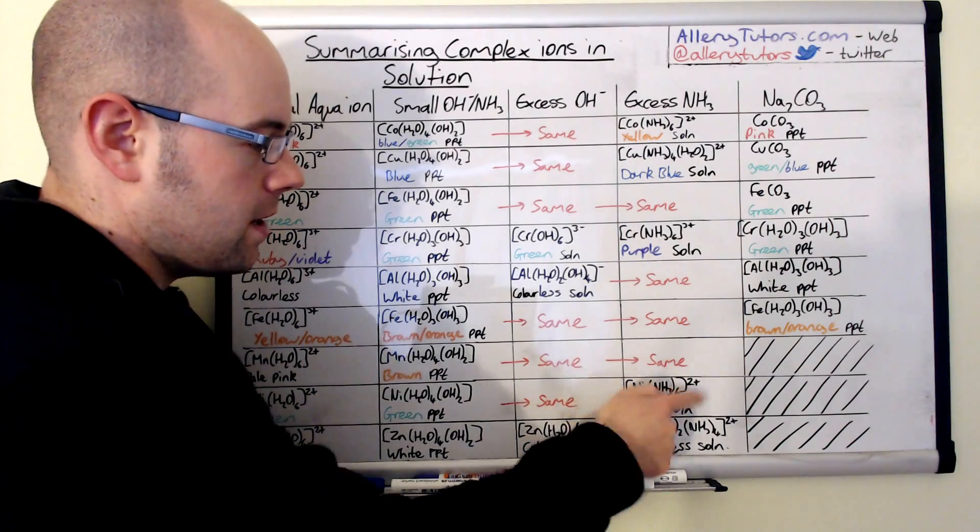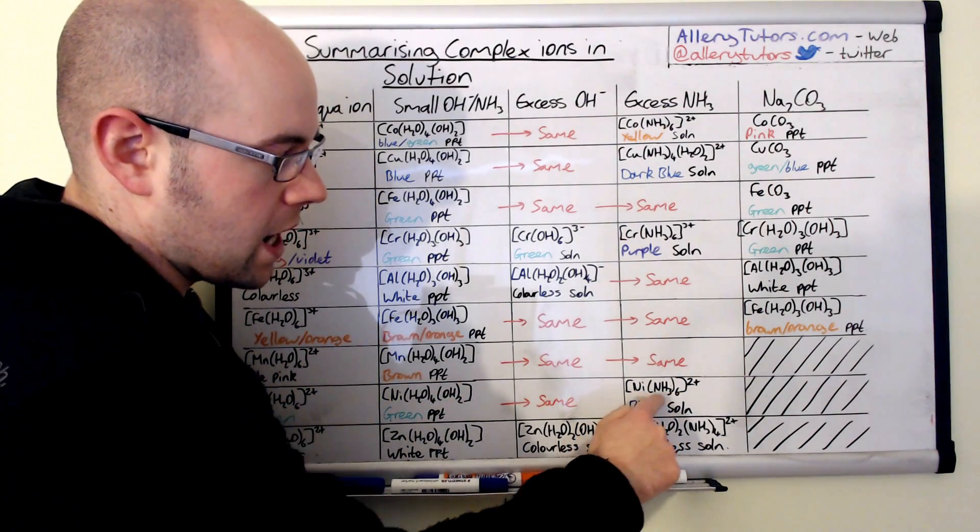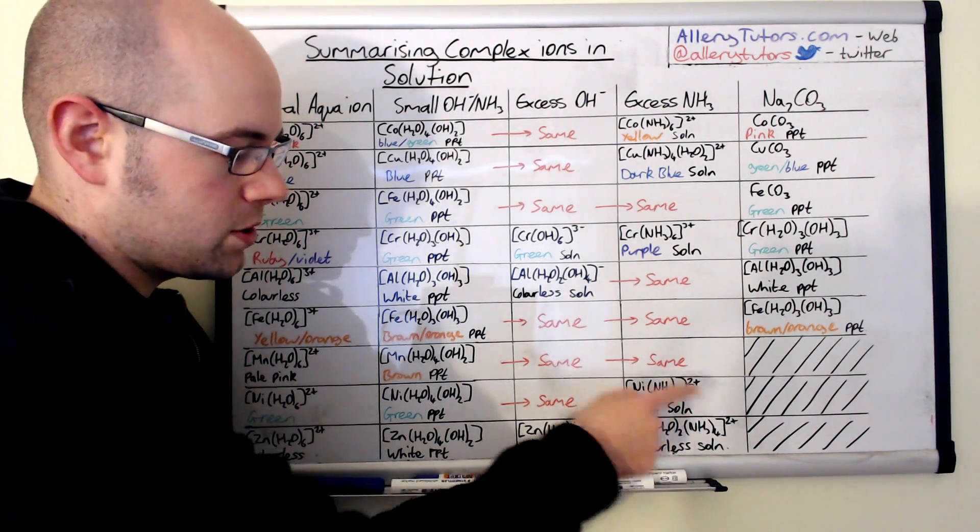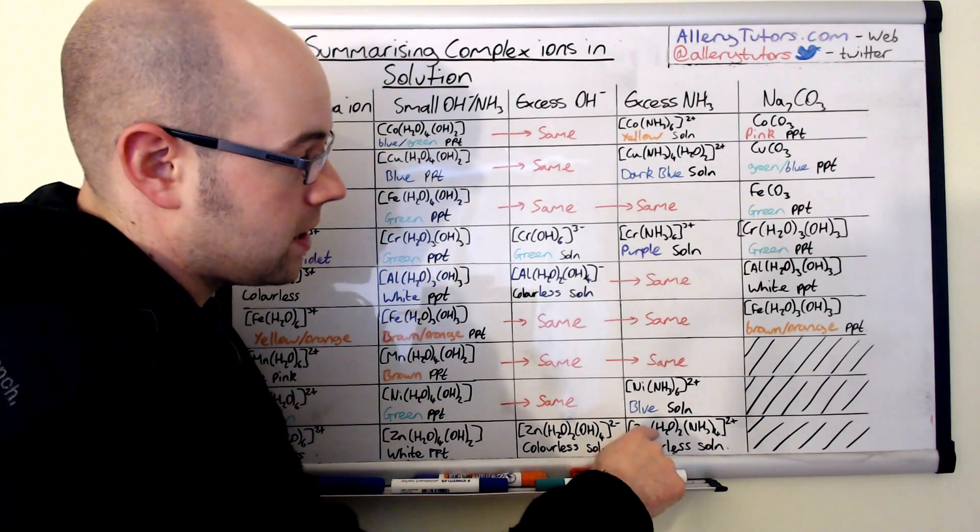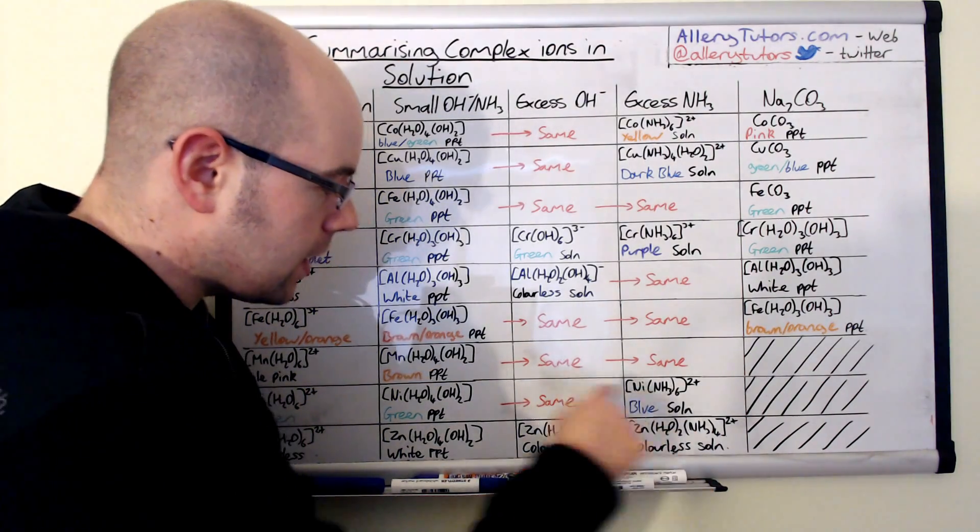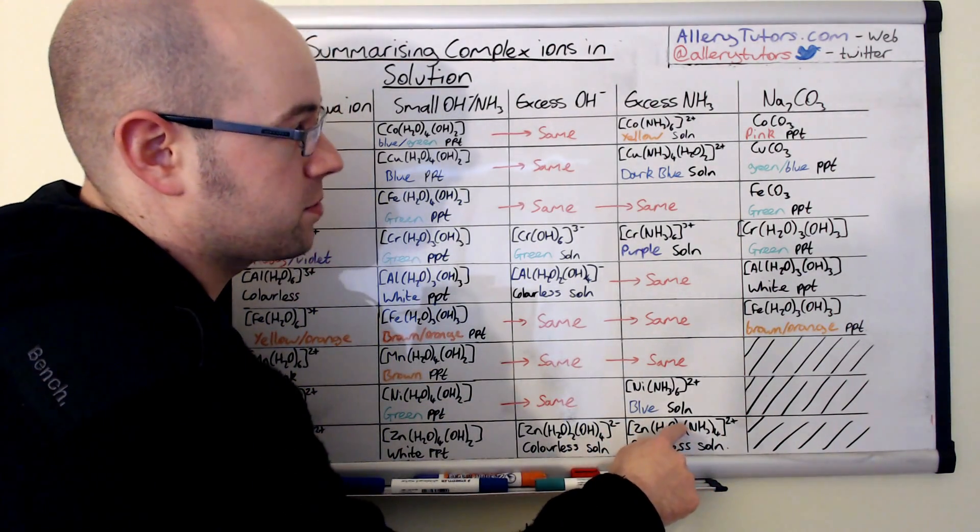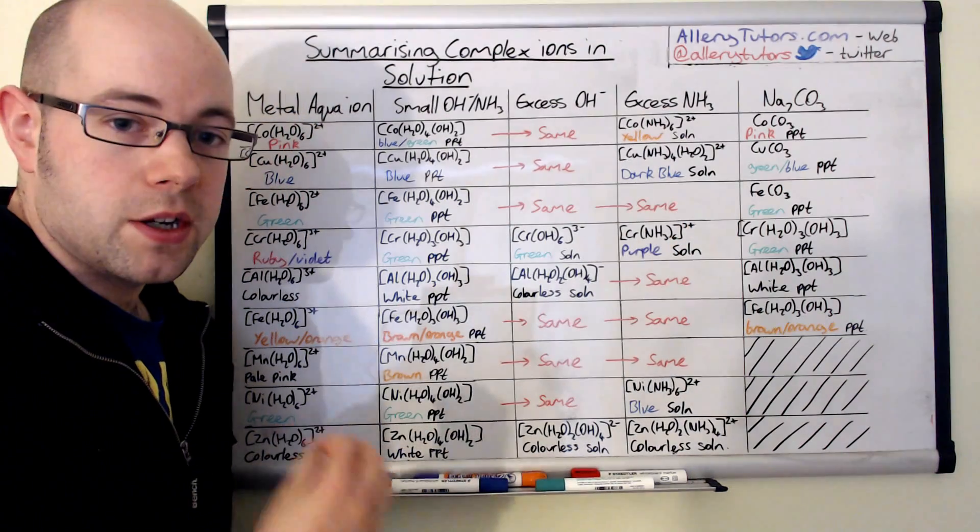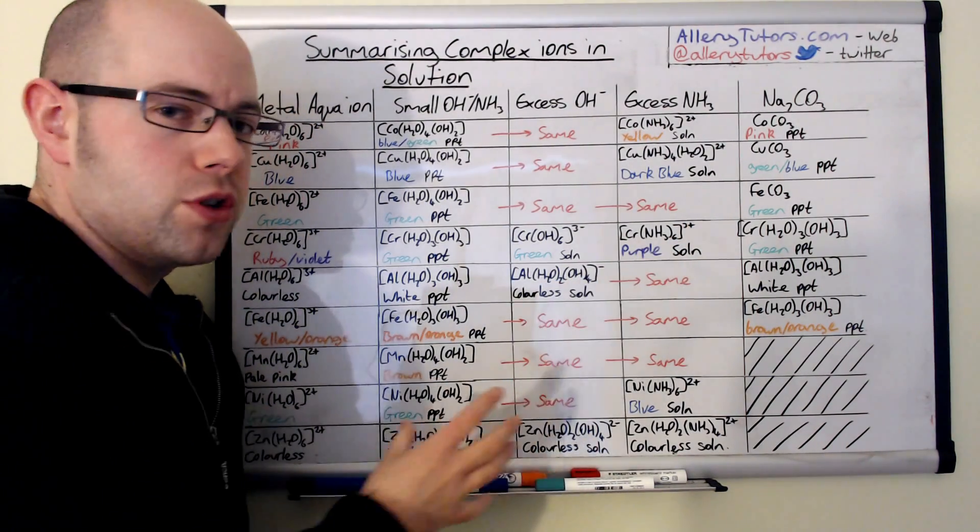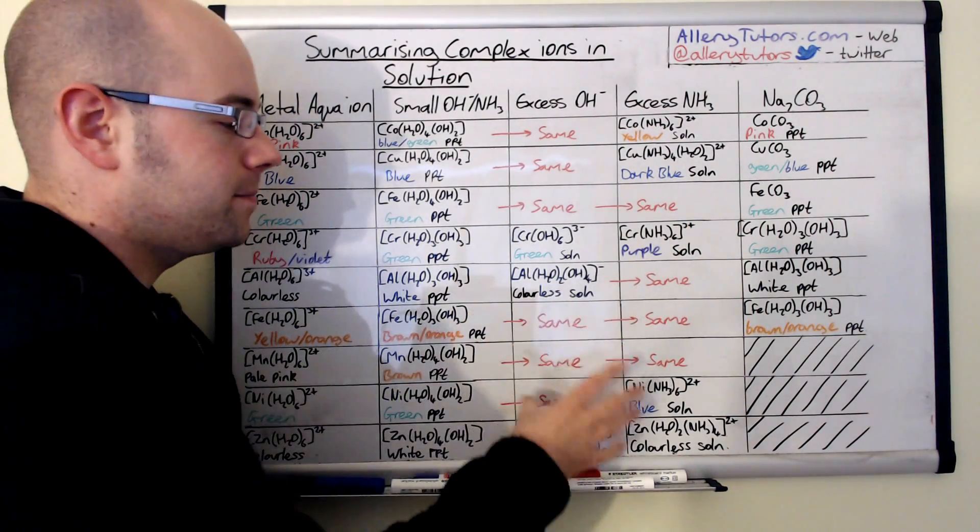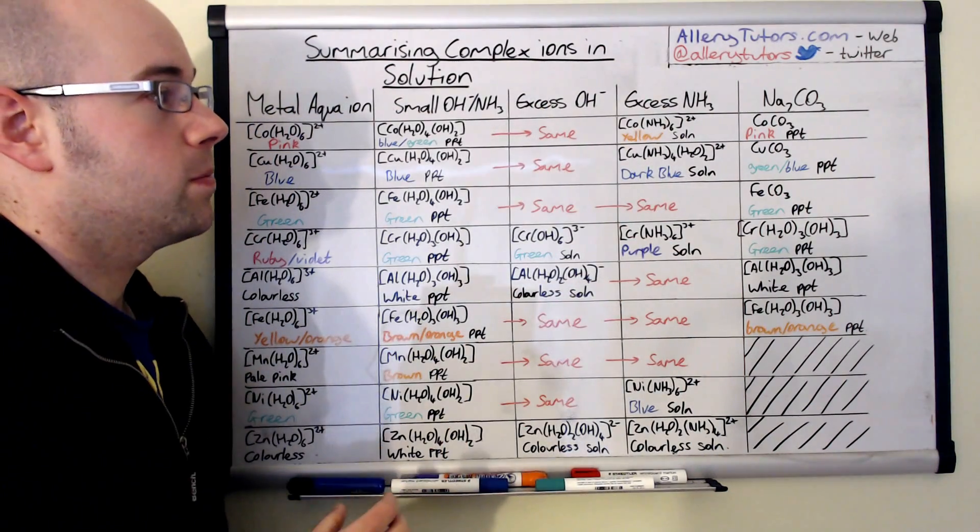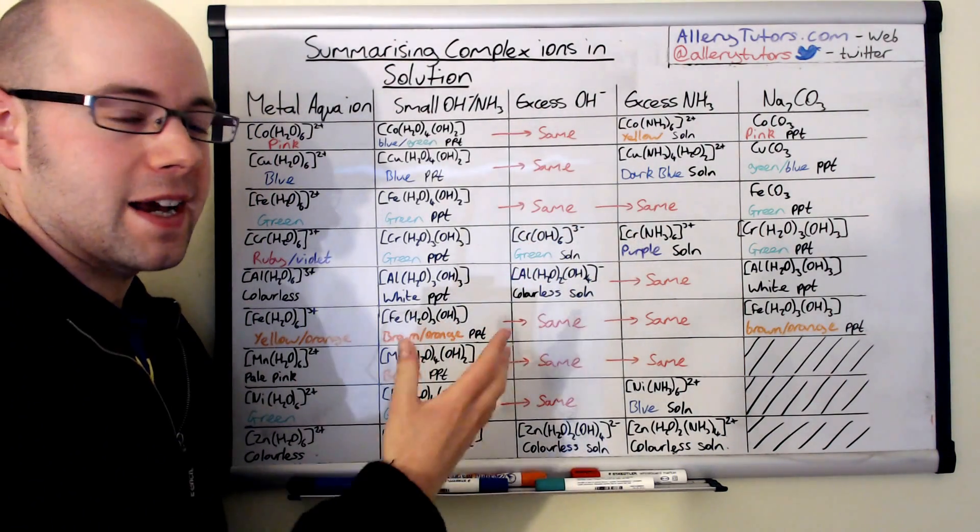With the nickel one again we get full substitution Ni(NH3)6 2+, you form a blue solution. And with the zinc again we get partial substitution a bit like with the copper one as well.